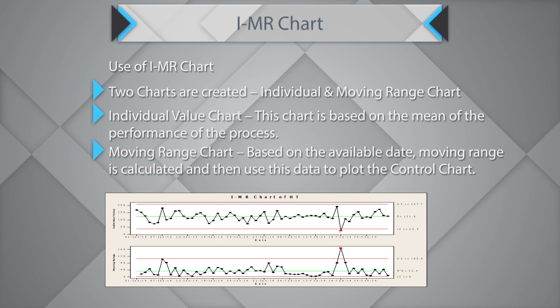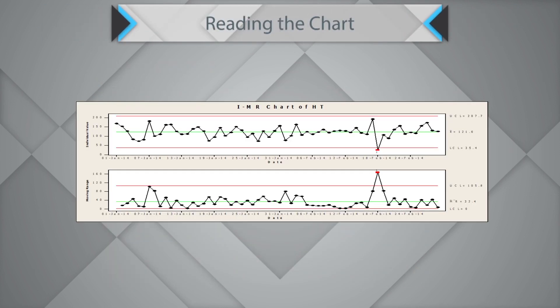Start with the bottom chart. When you draw the IMR chart, first check for any data point going beyond the red line of the UCL or LCL. In this case, we have two data points — one in the moving range chart and the other in the individual value chart — which are exceeding the control limits. Any data point outside the control limit is termed as being driven by special cause or assignable cause variation. The first thing you should look at is the moving range chart for special cause variation. If there is one or more, do not look at the individual value chart.